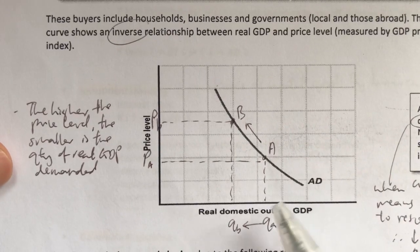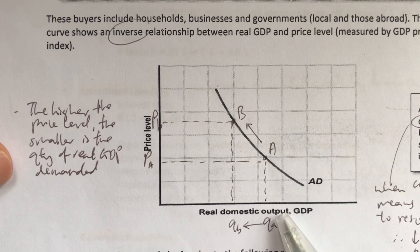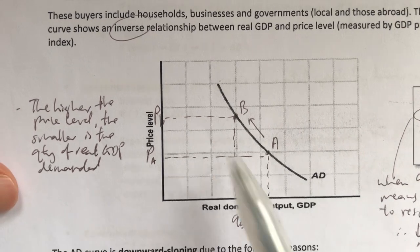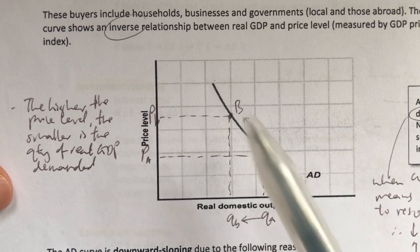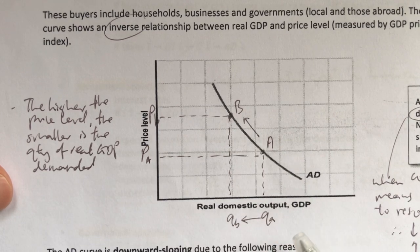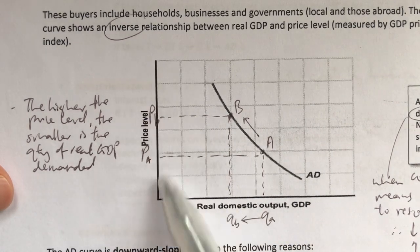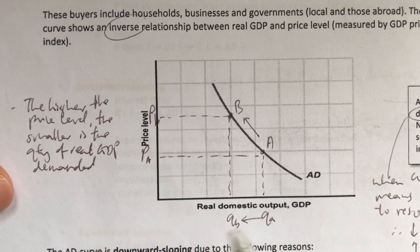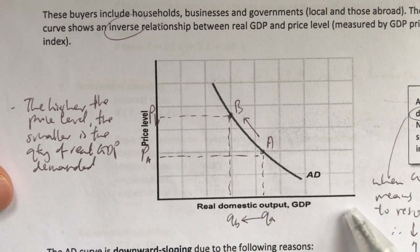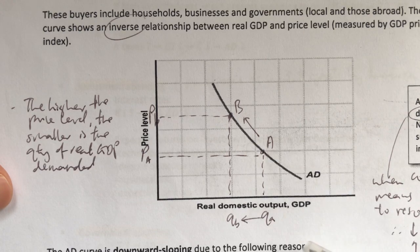Now let's take a look at how the Aggregate Demand curve looks like. As you can see, the curve is downward sloping. What that means is there's a negative or inverse relationship between the economy's overall price level, usually measured by the price index, and the amount of goods and services or real GDP being demanded by the four categories of buyers.